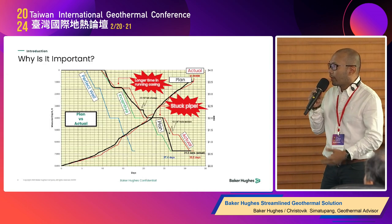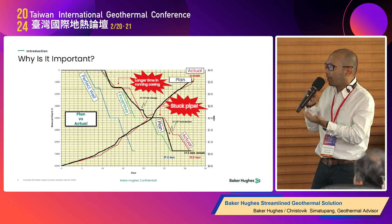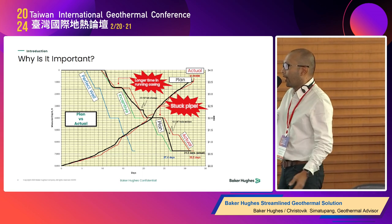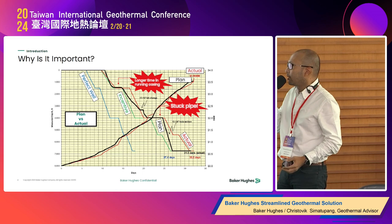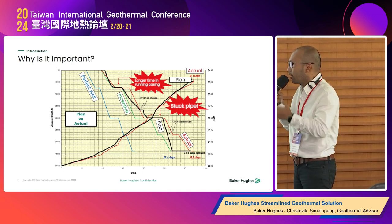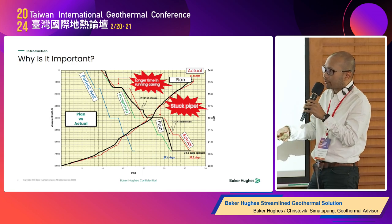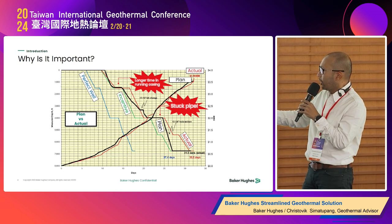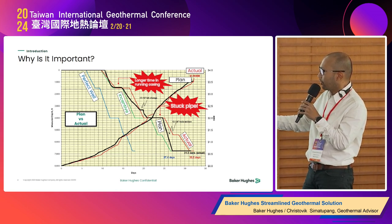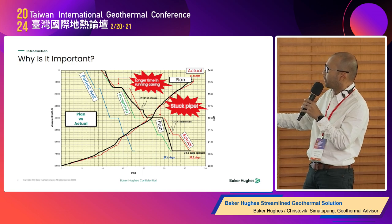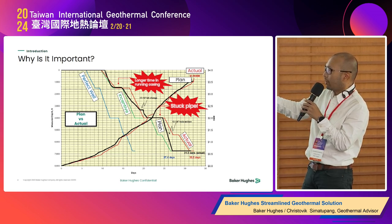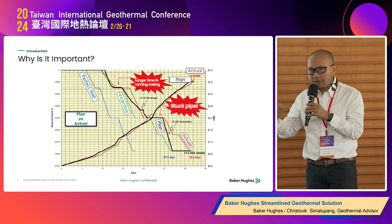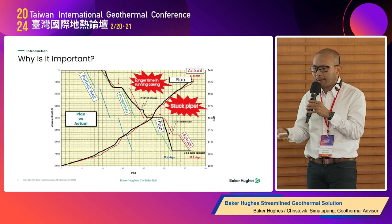Why is this important? If you look at a perfect well — indicated by the blue color — and they perform well, the company provides incentive to the drilling team. For example, if the plan is to drill in 27 days but the actual time is 32 days — five additional days due to stuck pipe — you can see how that additional time impacts the project economics.